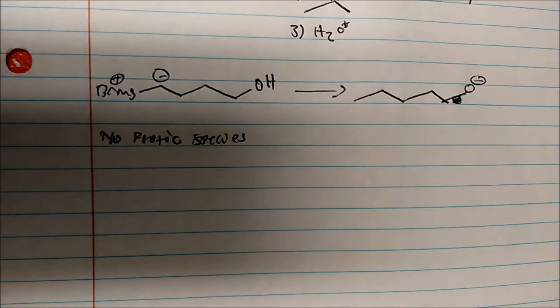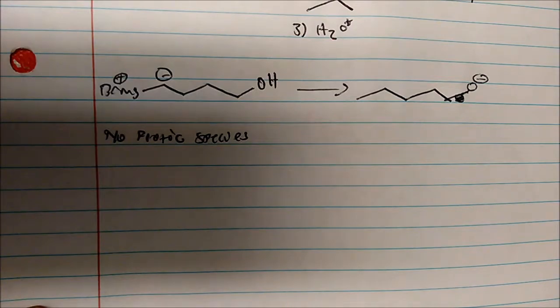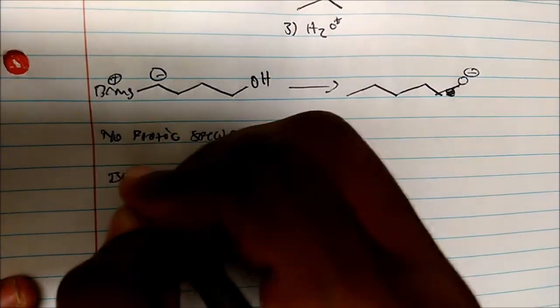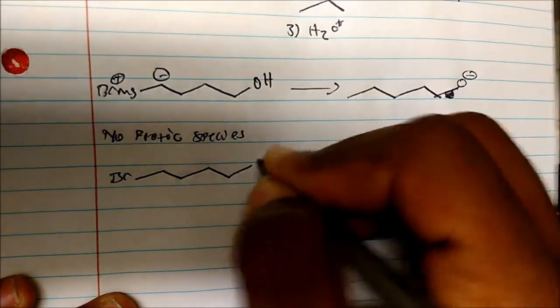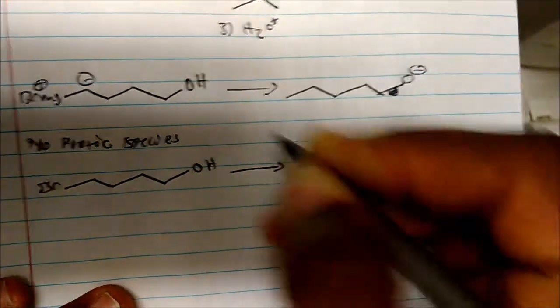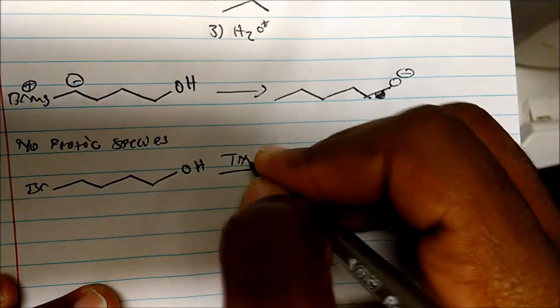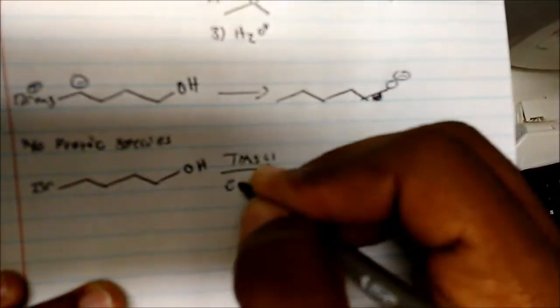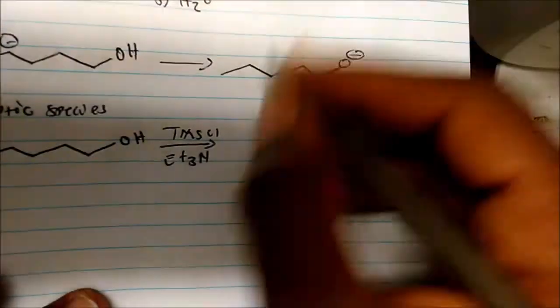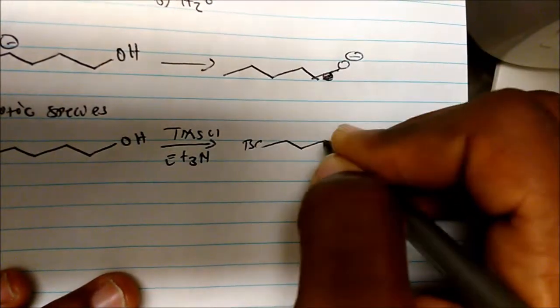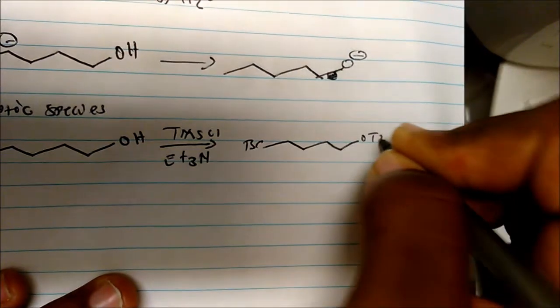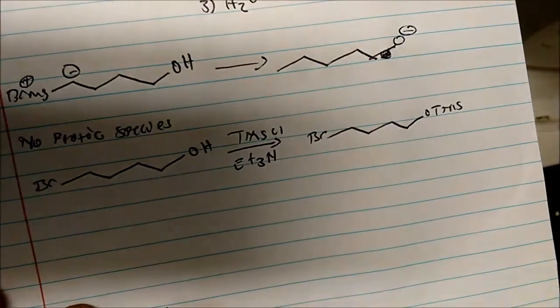If I wanted to carry out a reaction with this molecule here, the first thing I'm going to do is protect my alcohol. I'm going to add TMS-Cl - or any good protecting group - to protect my alcohol. Look what happens when I add my magnesium.